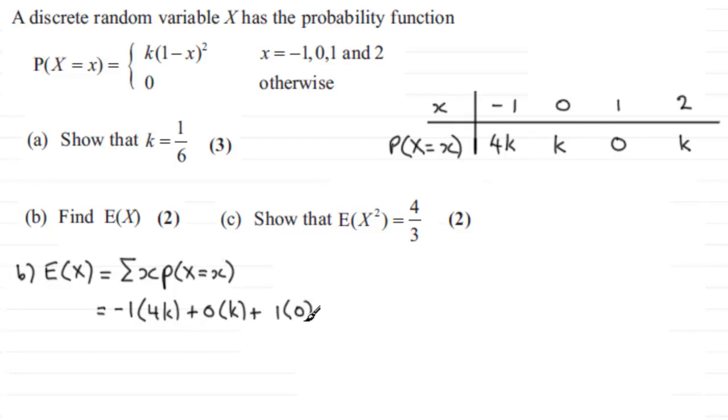So we've got 0 times K plus 1 times 0. Now I know that these two terms I've just written down as 0 but I'm just writing them down just for the sake of it, just to give you an idea of what happens for other questions that you might get like this. And so we do 2 times K for the last term. And what we've got here is a total of minus 4k. These two are 0 plus another 2k. So that's going to be minus 2k.